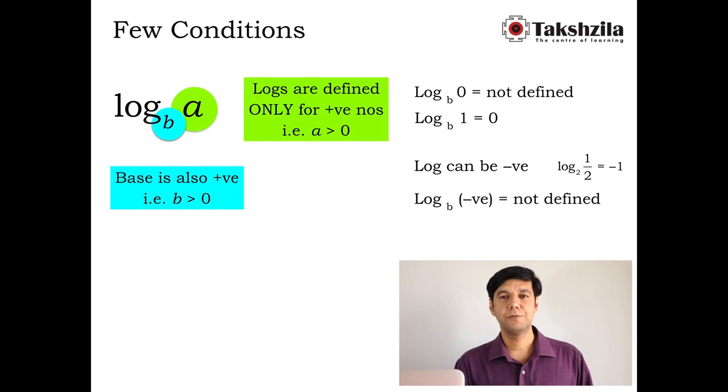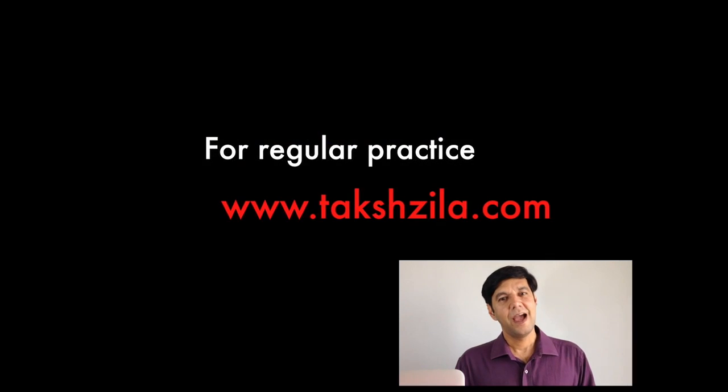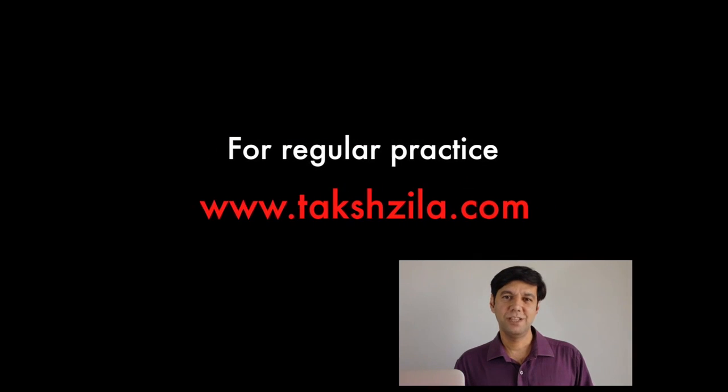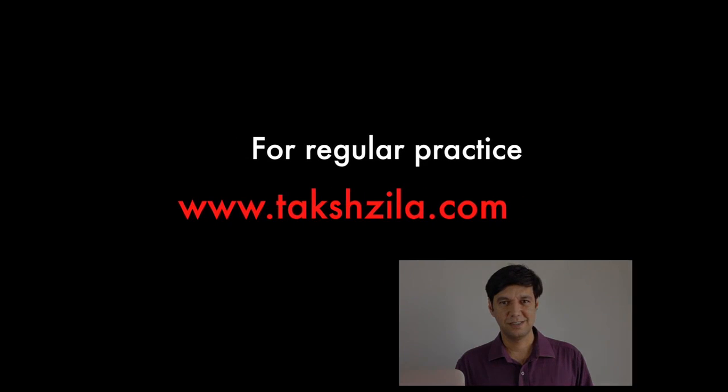There are some conditions on the base as well. The base also necessarily has to be a positive number; 0 is not allowed. In addition, the base cannot be 1. If the base was 1, we would be doing calculations of the type: 1 raised to what number will result in a? We know 1 raised to any number is always 1, and we might not make it equal to a. Therefore, the base cannot be 1. In future lectures, we would continue with a few more rules of logs.